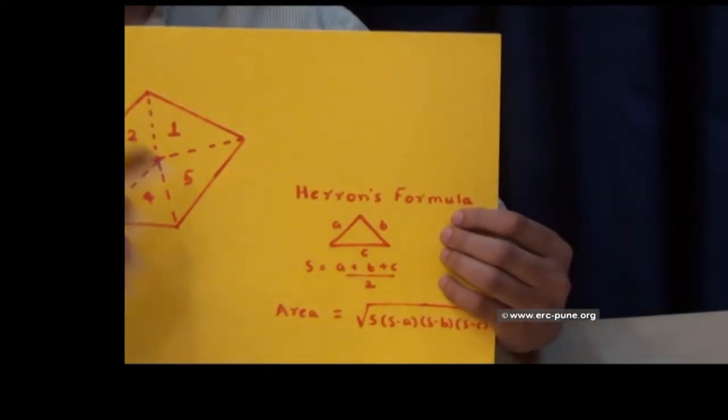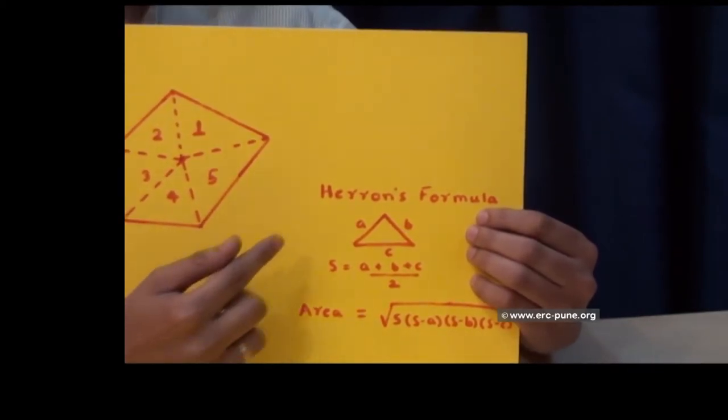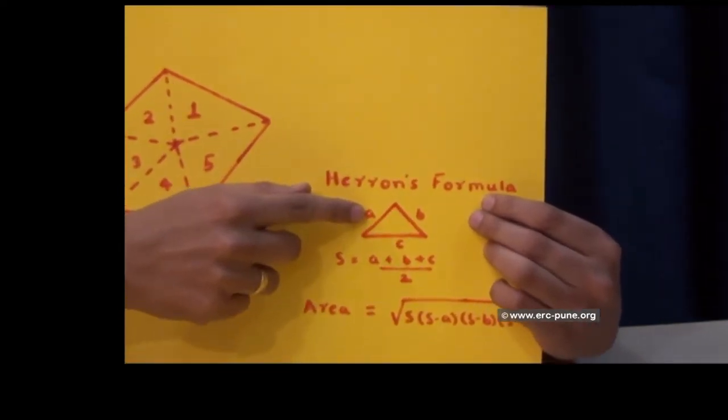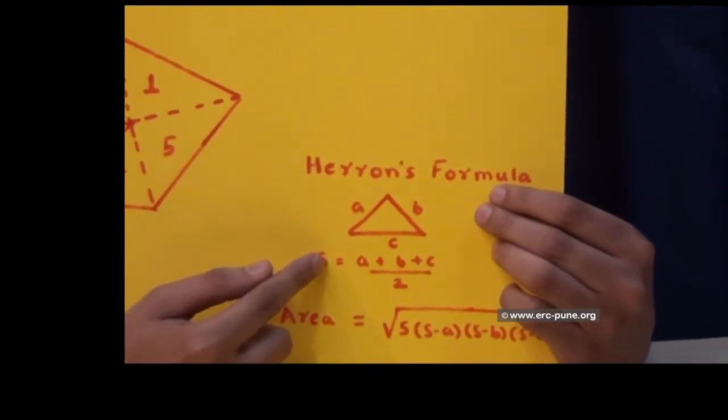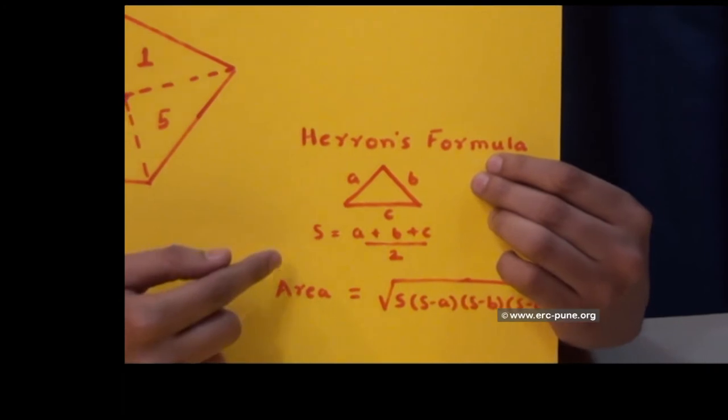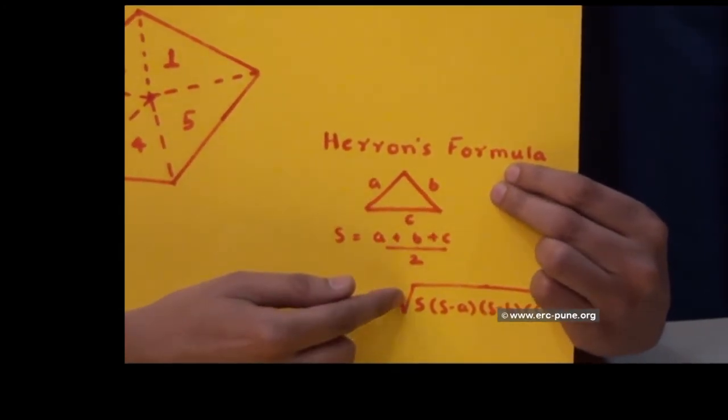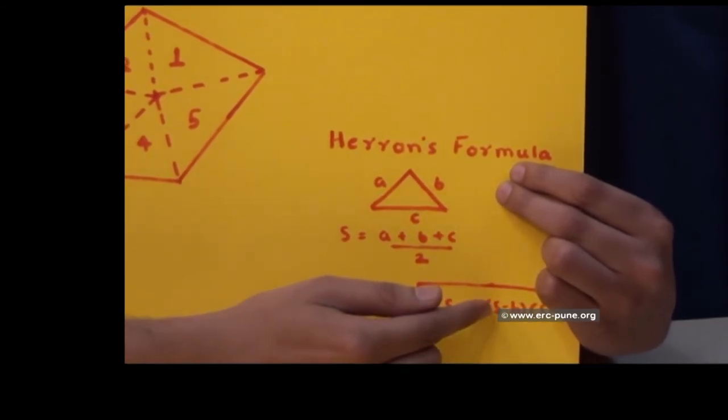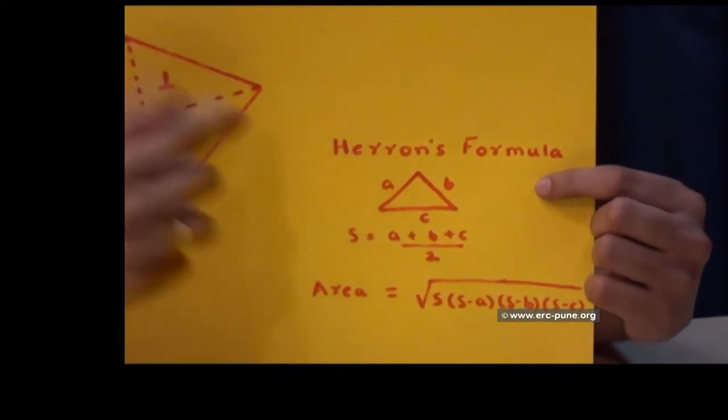Now here is the Heron's formula to find area of a triangle given its sides. So here I have shown you a small triangle with sides of length a, b and c. S is a half perimeter and the area of this triangle is square root of s multiplied by s minus a multiplied by s minus b multiplied by s minus c. So this gives us the area of this triangle.